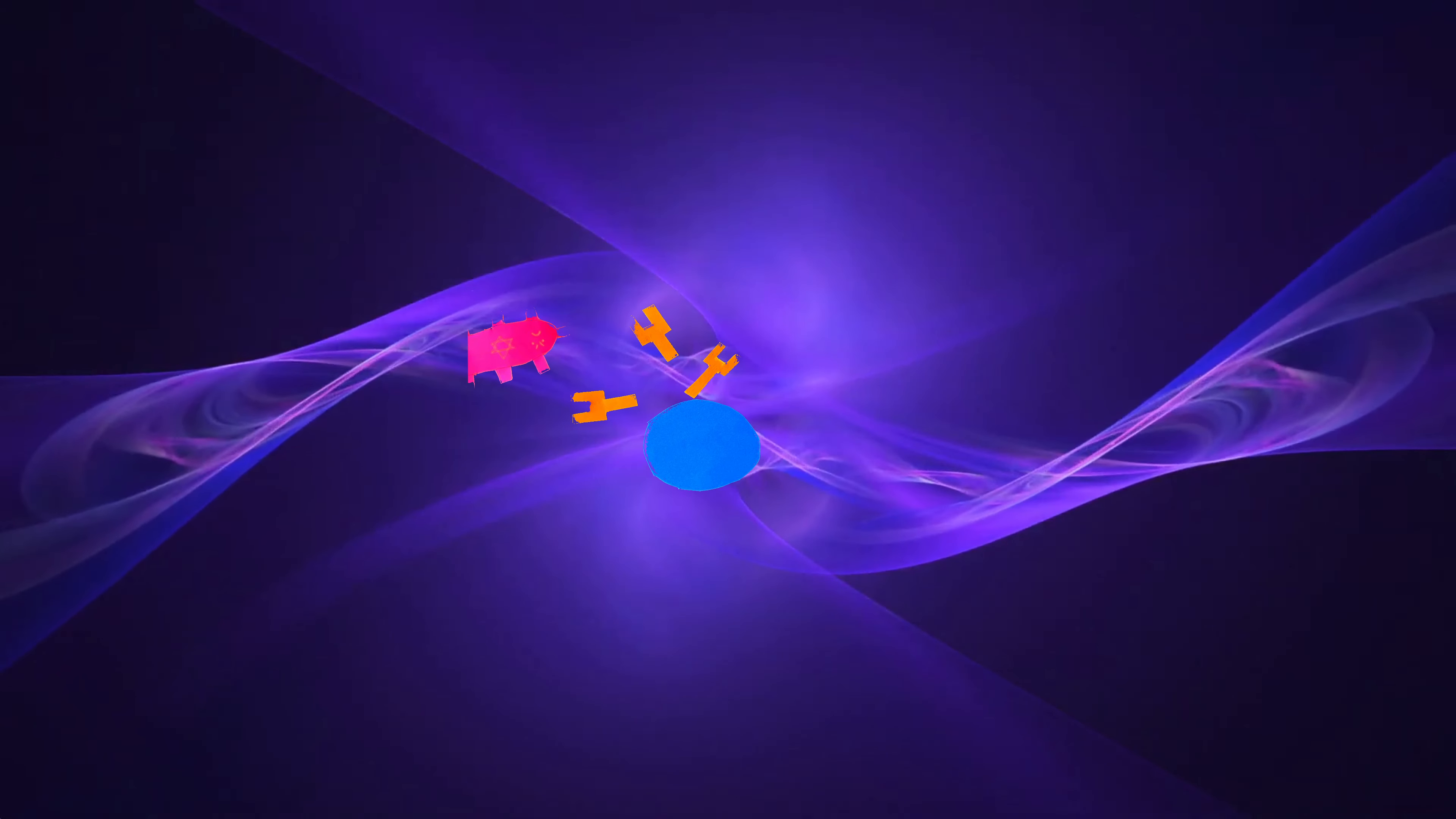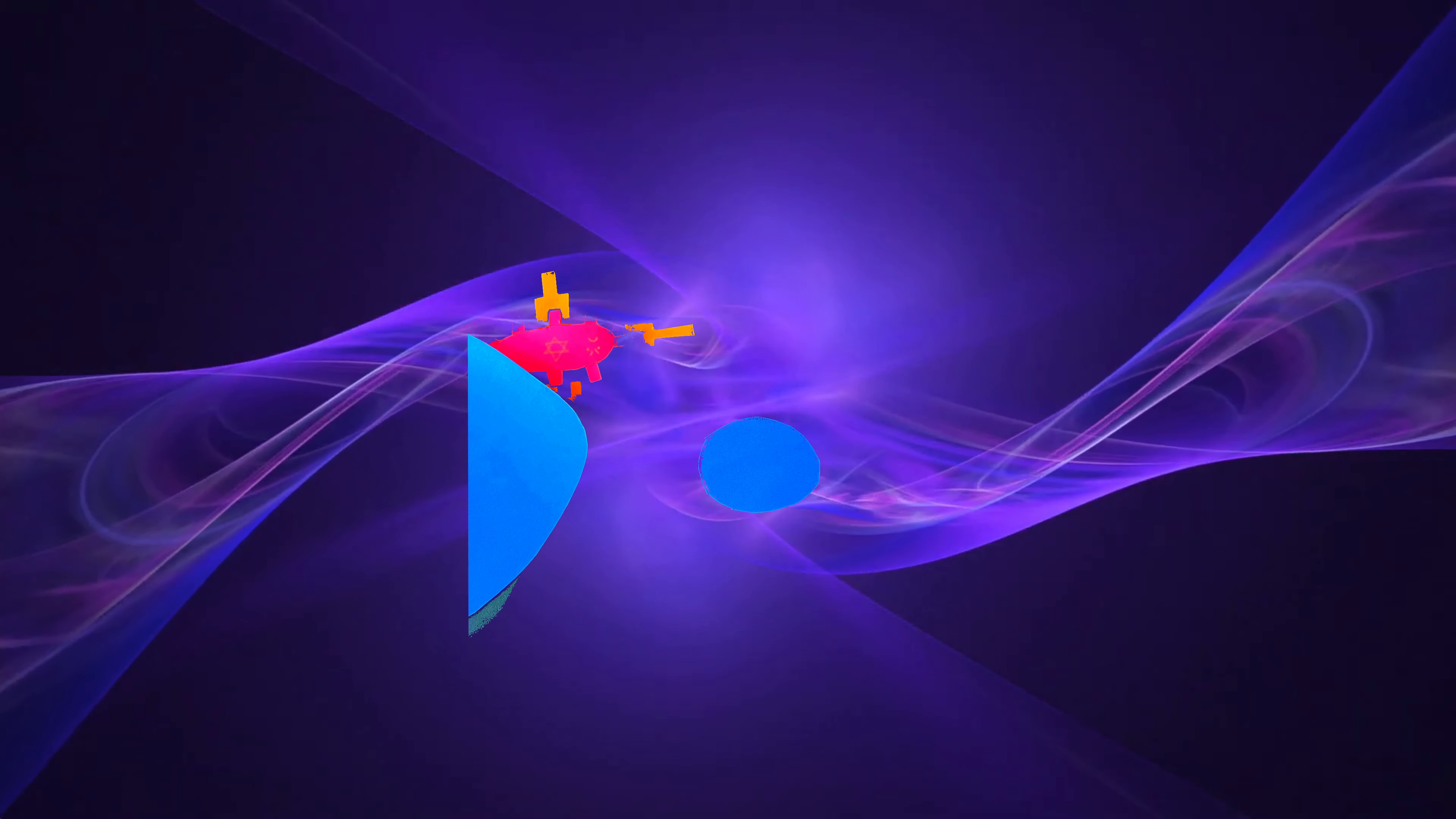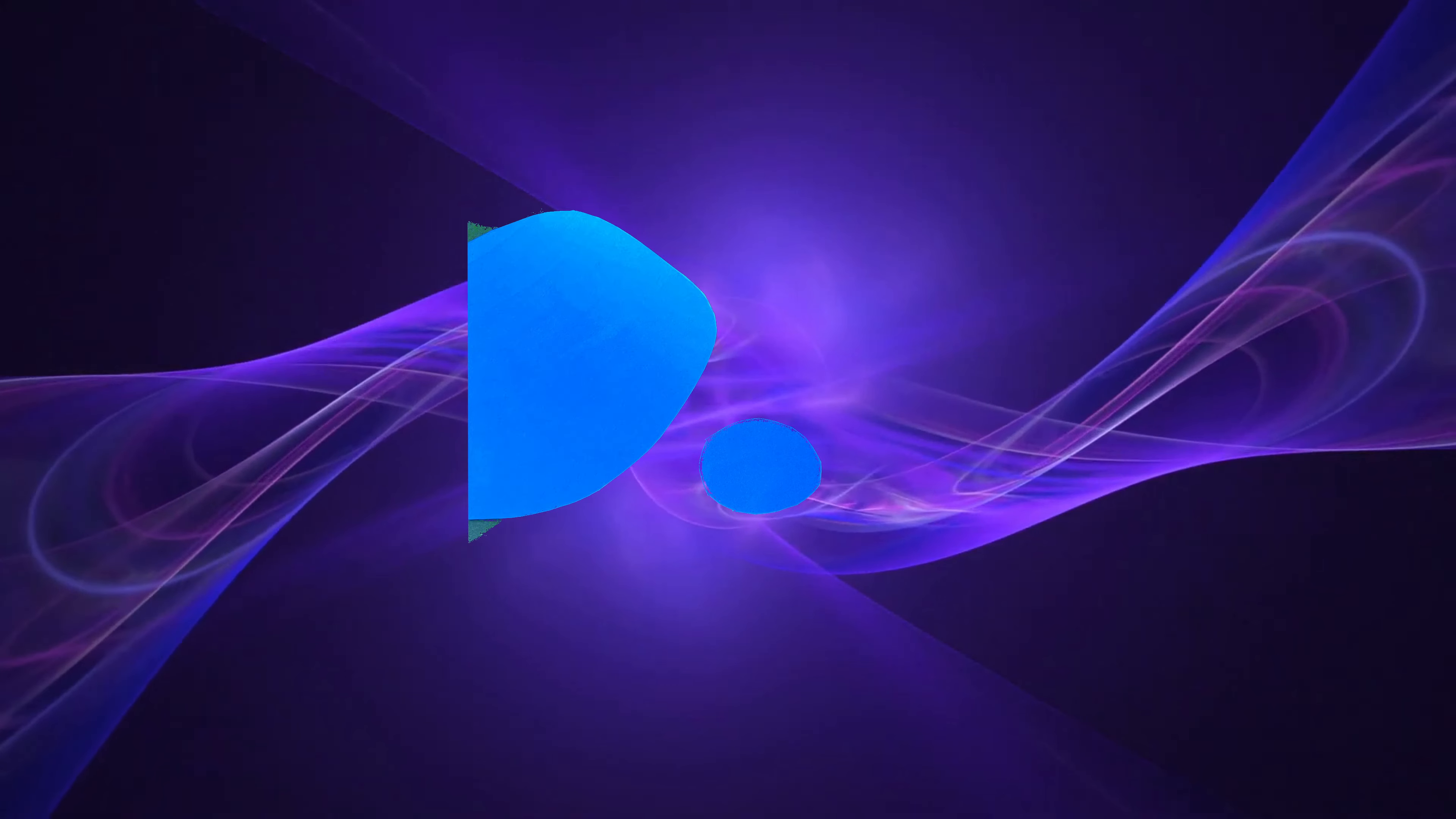These cells release cytokines, further stimulating the immune response. The B cell clones then divide, producing plasma cells that generate large amounts of antibodies, targeting the pathogen for elimination.